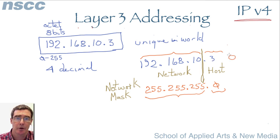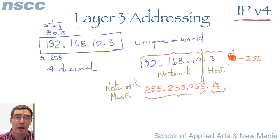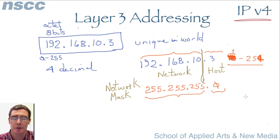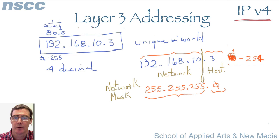The last number can go from 0 to 255, but we can't use 0 because that's reserved for the network itself, and 255 is all ones — it's a broadcast. So we can actually go from 1 to 254, meaning we can have 254 machines in this network. That's the basis of an IP address.